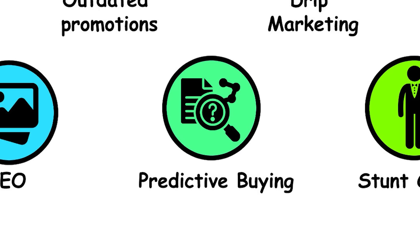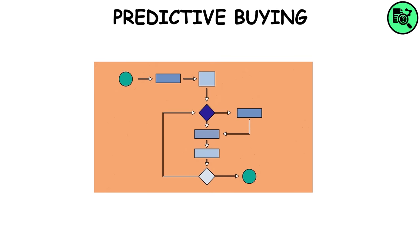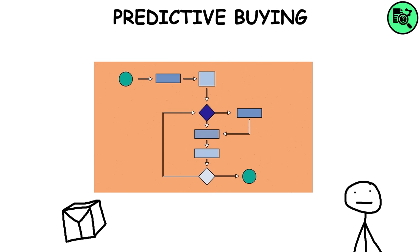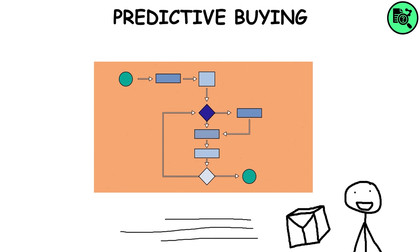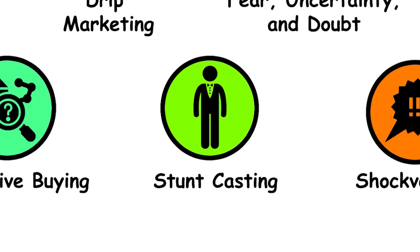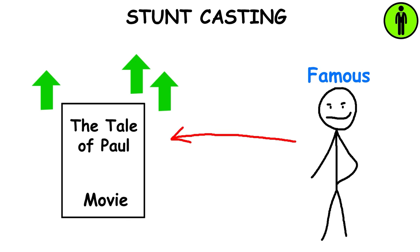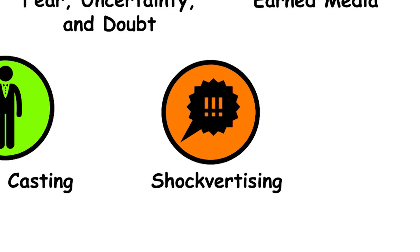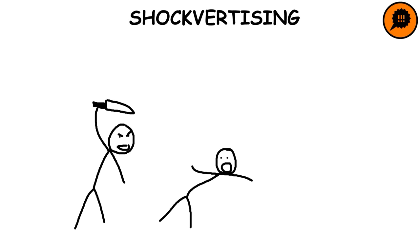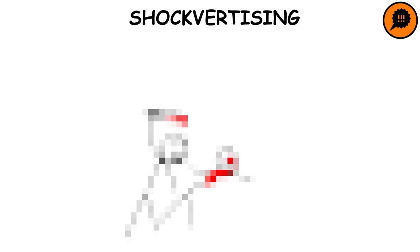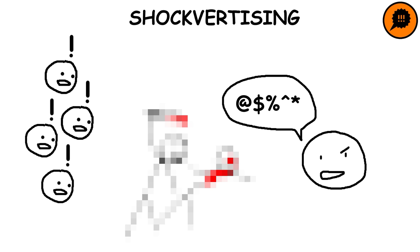Predictive Buying: Using algorithmic analytics to predict and present products to potential buyers in targeted advertising. Stunt Casting: The practice of casting a famous actor or other celebrity in a small role in order to promote a film. Shockvertising: Using startling and offensive content to capture attention, create buzz, and raise awareness.